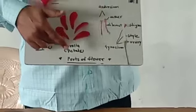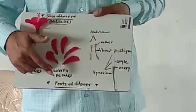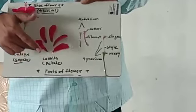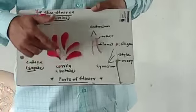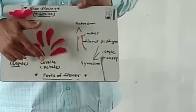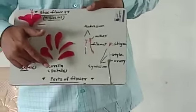The second whorl is the Corolla, which is the outer membrane or outer part of the flower. It is colourful and multicoloured. It attracts insects for the pollination and fertilization.